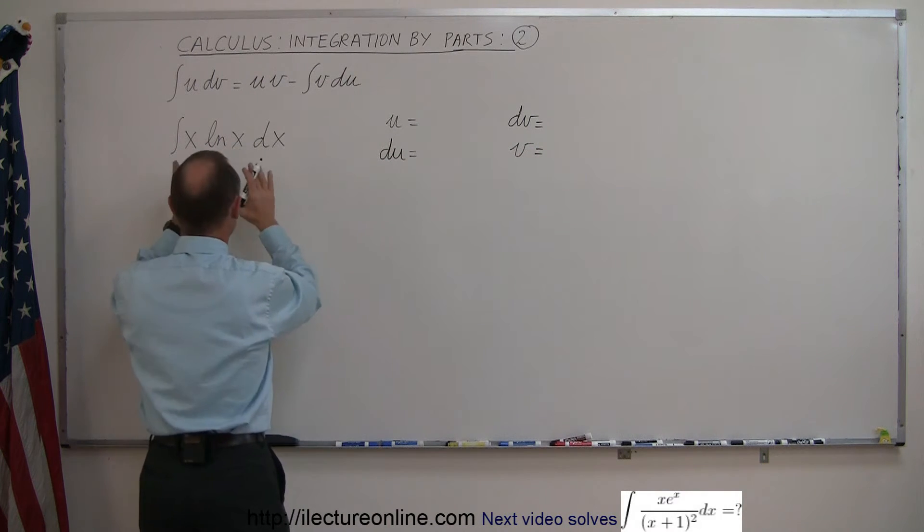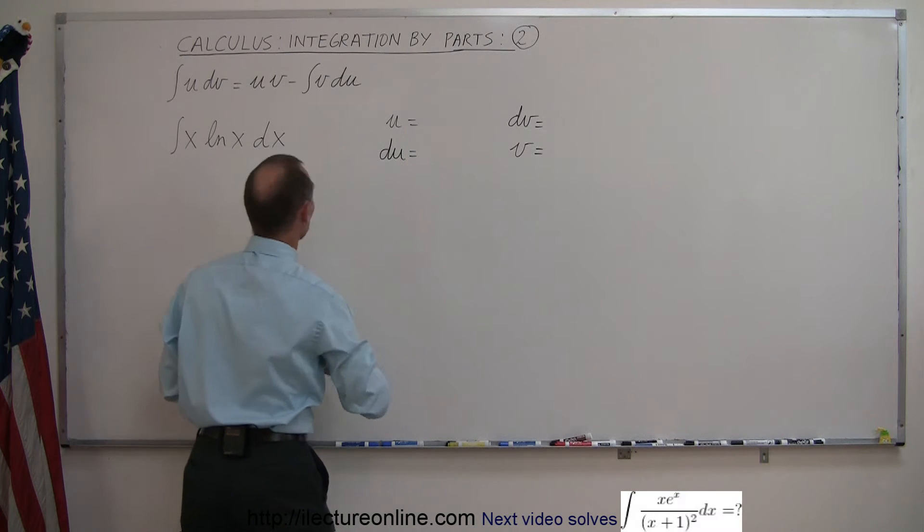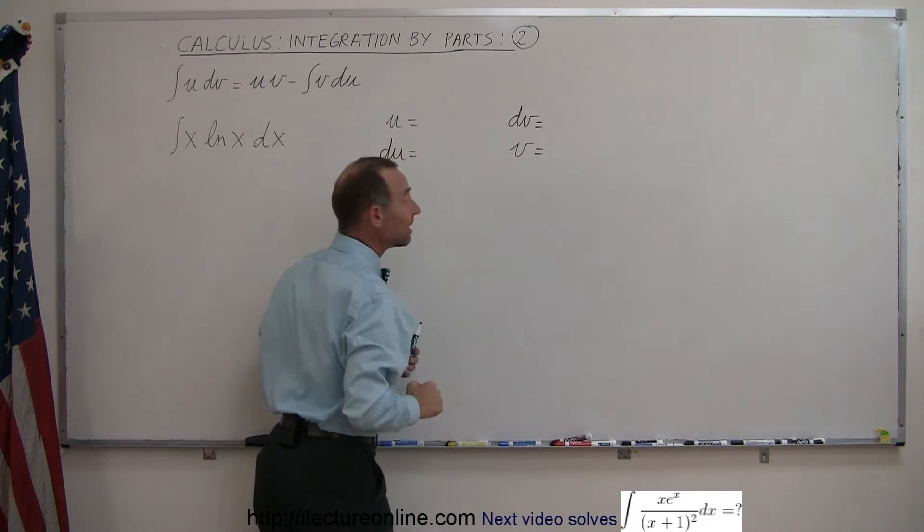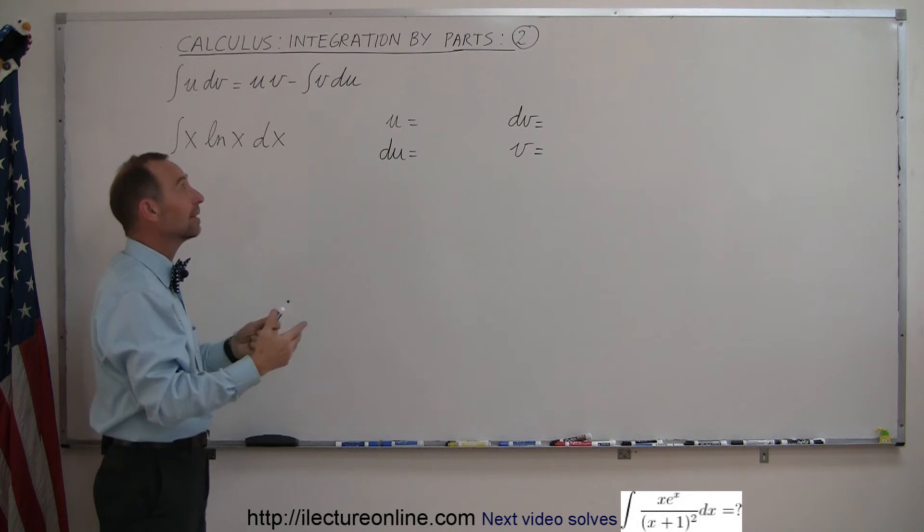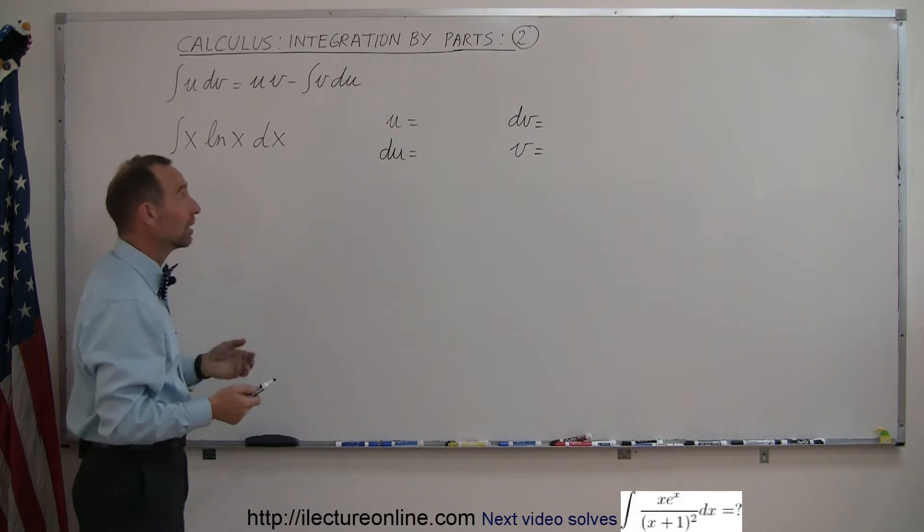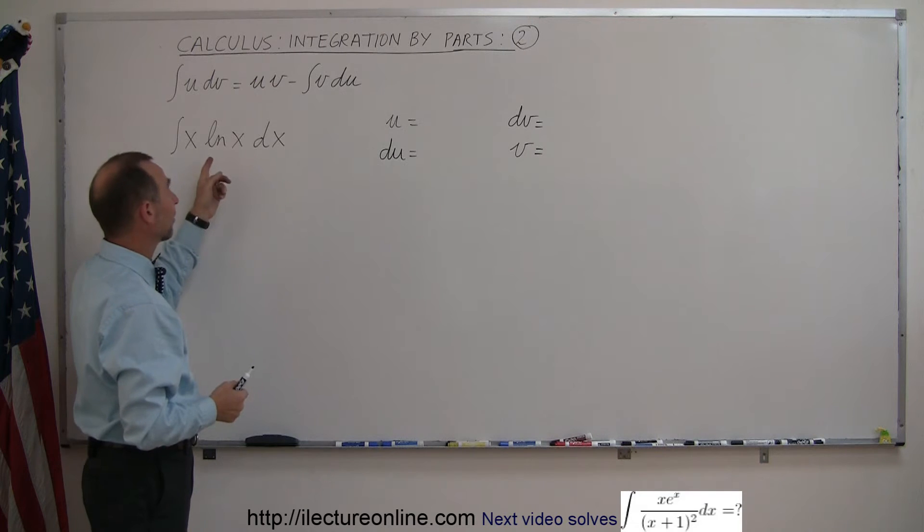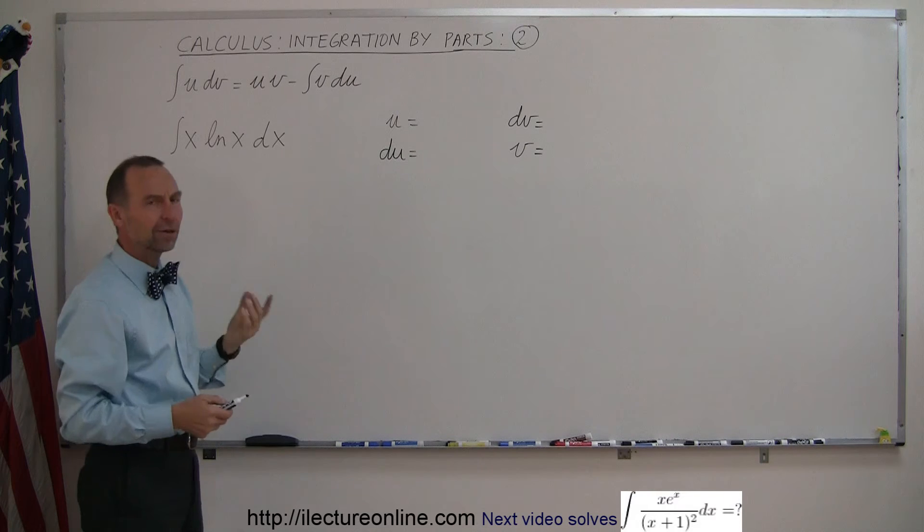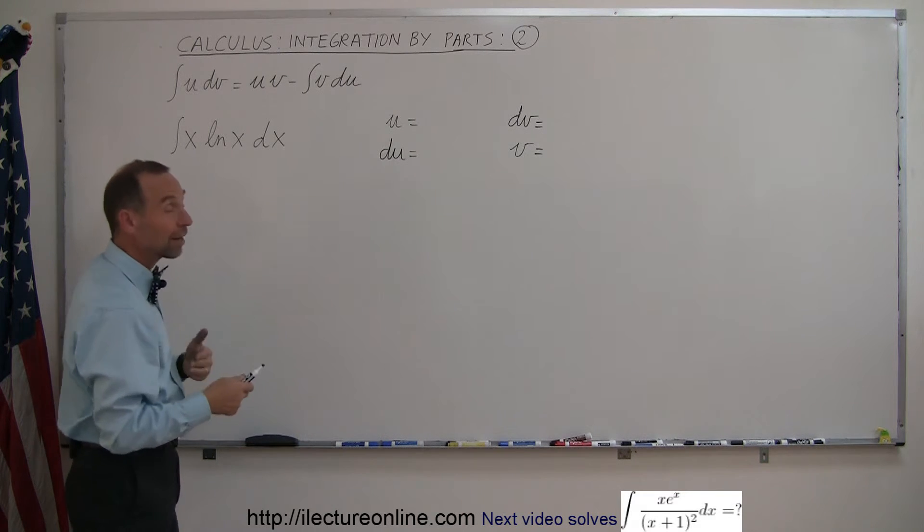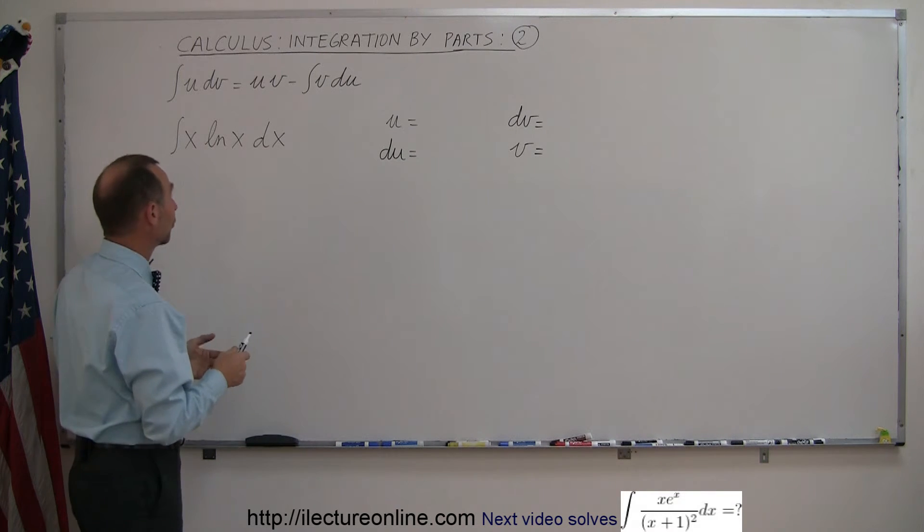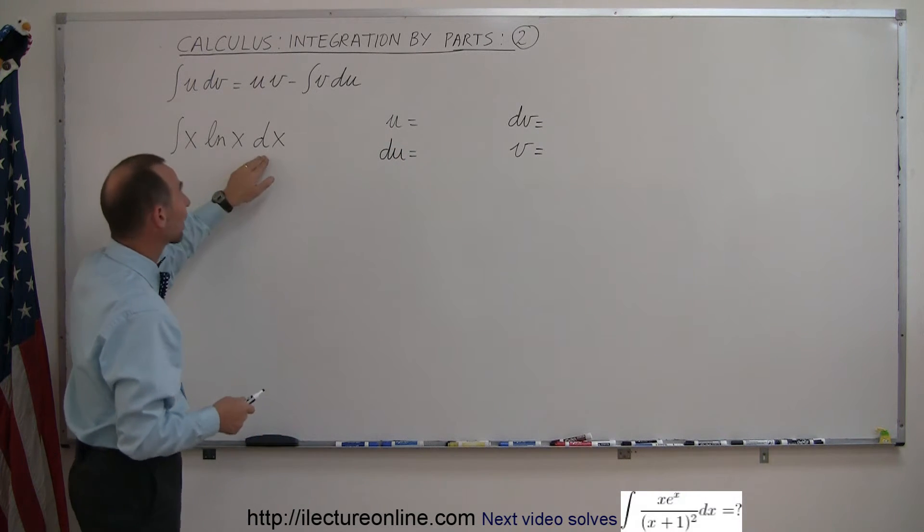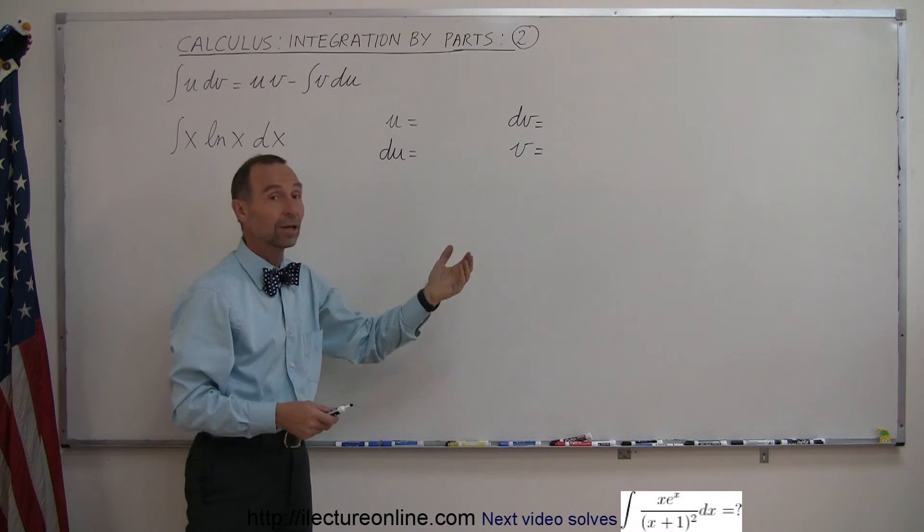Now, the way you figure out which is which depends upon whether you can integrate dv and differentiate u. If I let dv be the natural log of x dx, that will give you a problem because you cannot readily integrate the natural log of x. So it's preferable that you let the natural log of x be u because that's easy to find the derivative of, and then x dx to be dv because that's easy to integrate.